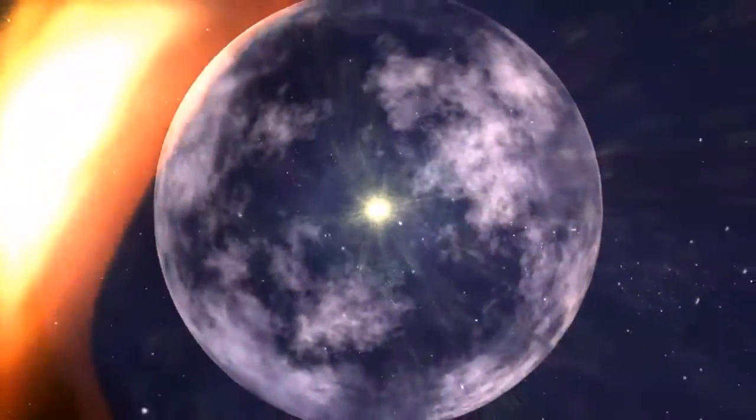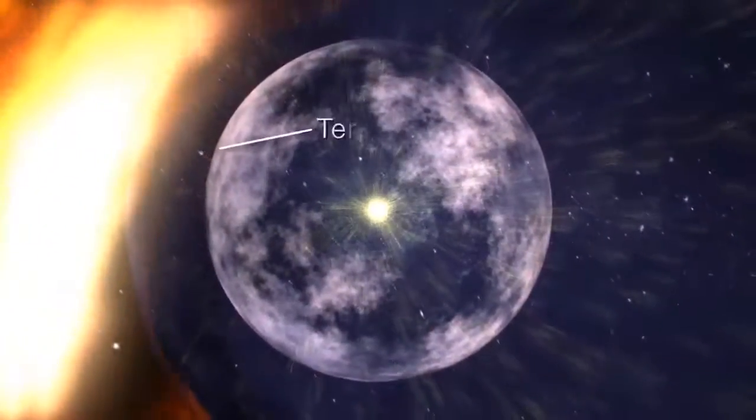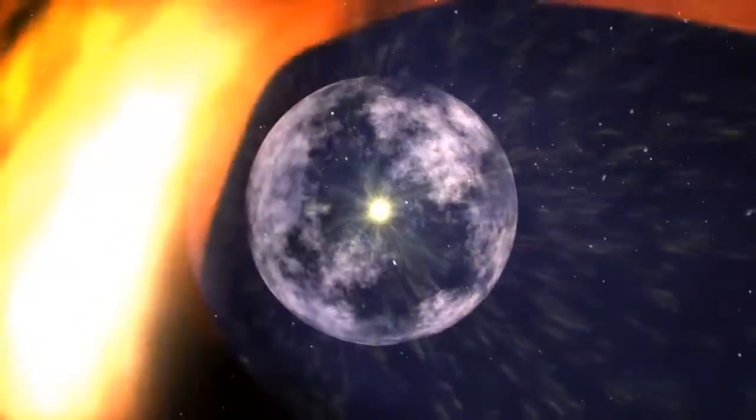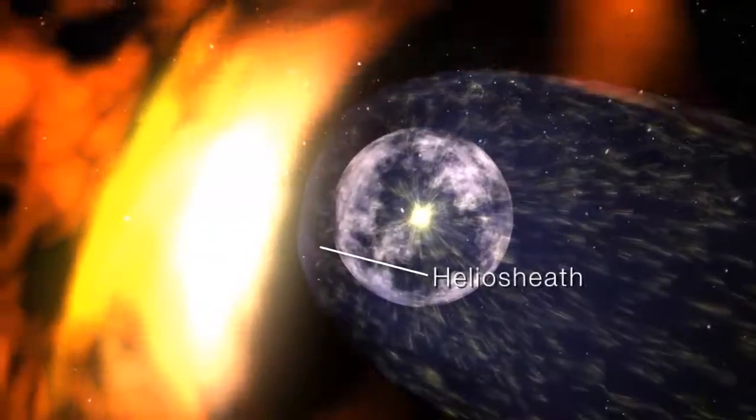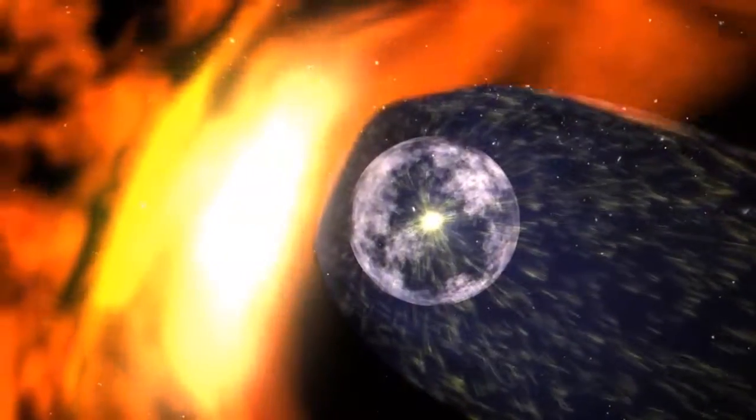As the solar wind travels out from the Sun, it pushes against the galactic medium and abruptly slows down. This is called the termination shock. Outside this is the heliosheet, where the solar wind slows to a stop, and the magnetic field is bent back by the ionized interstellar wind.